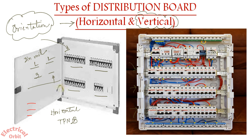In a vertical TPN DB, the din rail segments are arranged one, two, three, four vertically. For example, one segment can be used for R phase, one for Y phase, and one for Blue phase. Similarly, in a vertical TPN DB you can use R, Y, B phases according to the convenience of the electrician designing the distribution system.